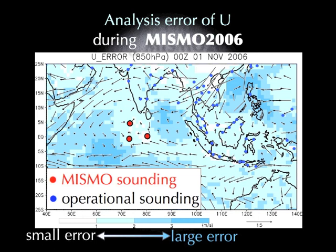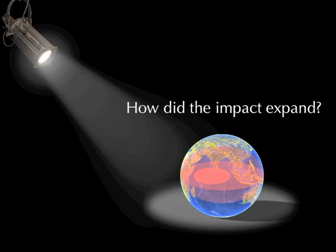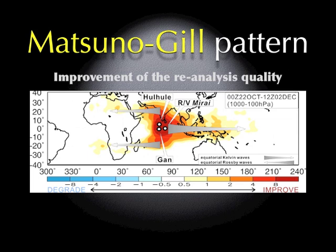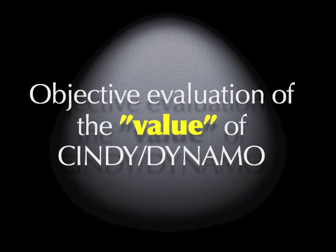But we did it and we get a great improvement like this. It's very remarkable, isn't it? So now we have one question: how did the impact of our observation expand? We can take the difference between two datasets with and without the assimilation of MISMO, and we get the improved area showing an unbelievably beautiful Matsuno-Gill pattern. It is more than 20,000 kilometers wide because Kelvin and Rossby waves transported the observation information to the east and west.